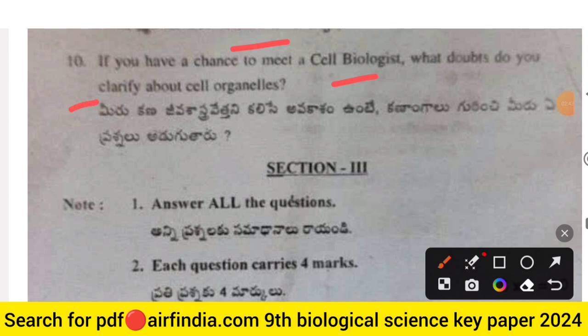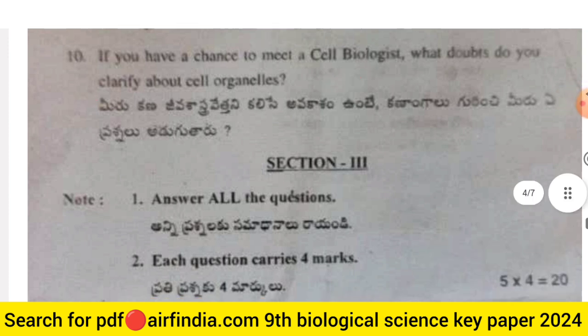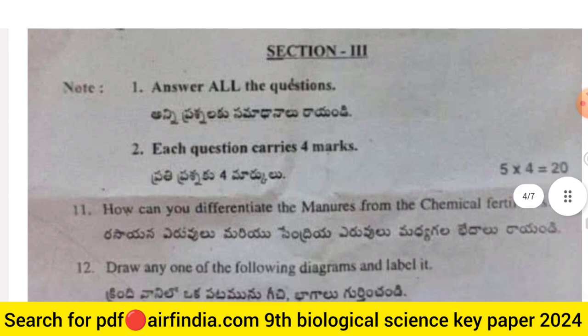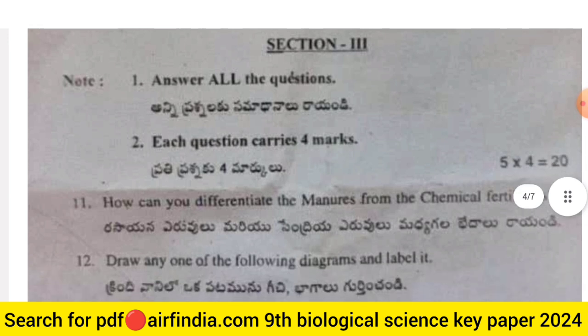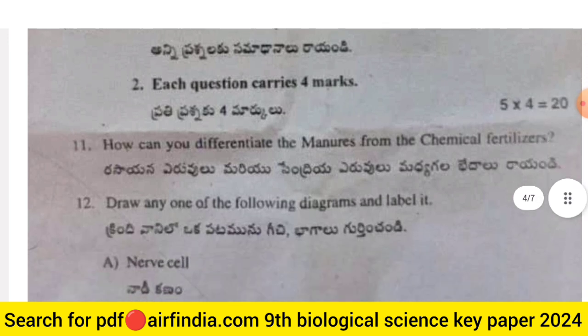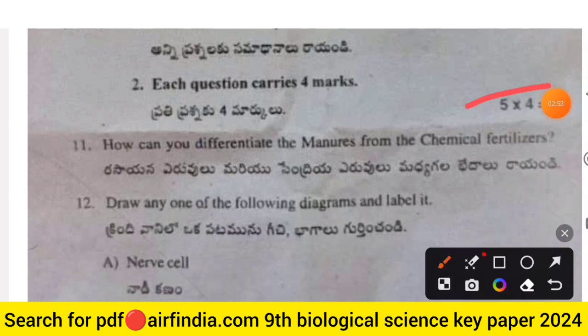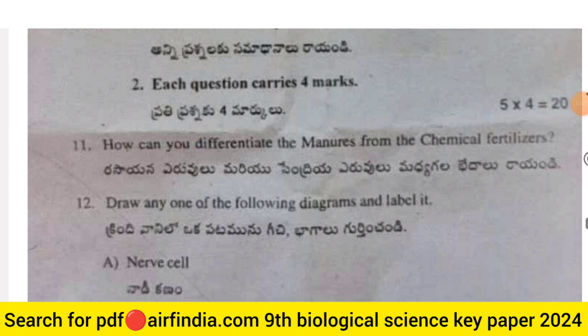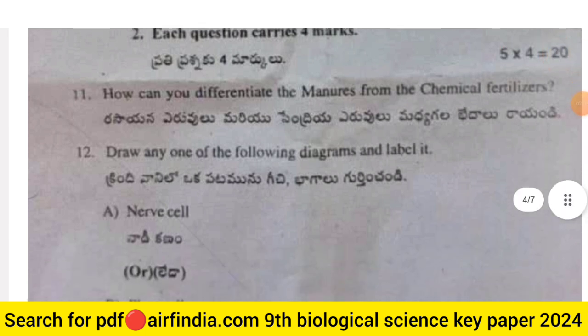Question 10: If you have a chance to meet a cell biologist, what doubts would you clarify about cell organelles? Section 3 carries 20 marks, four marks per question.